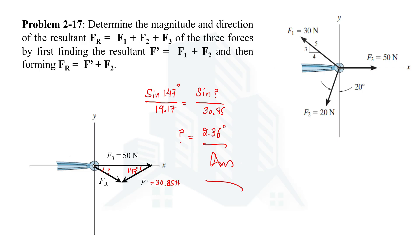This resultant is the resultant of all three forces as required. We determined the magnitude and direction of FR by first finding F', the resultant of F1 and F2, and then combining F' with F3. If anything is unclear, please let me know in the comment section. Thanks for watching and I hope to see you in the next video.